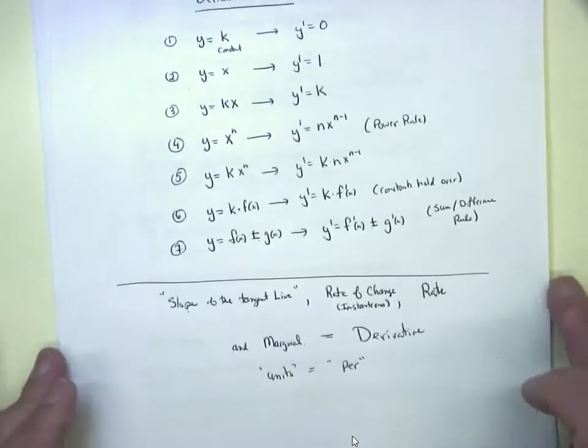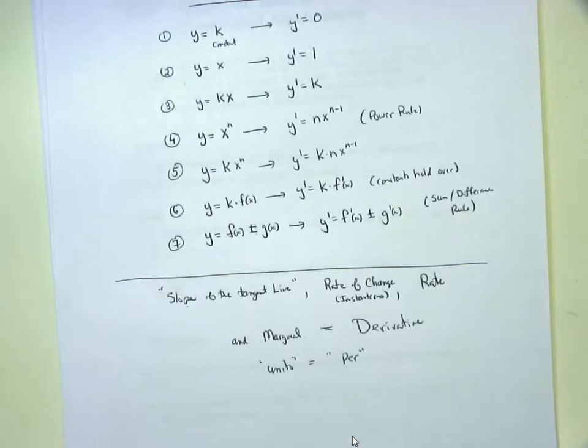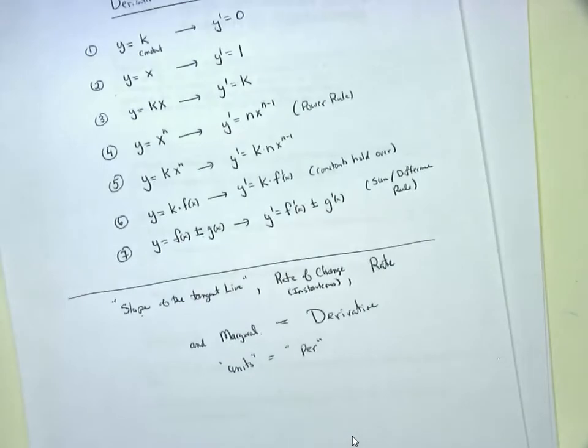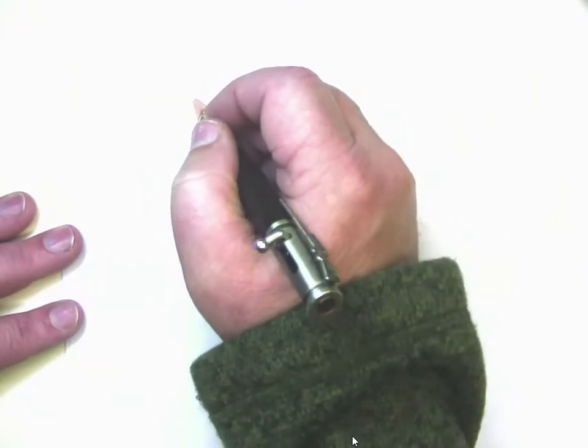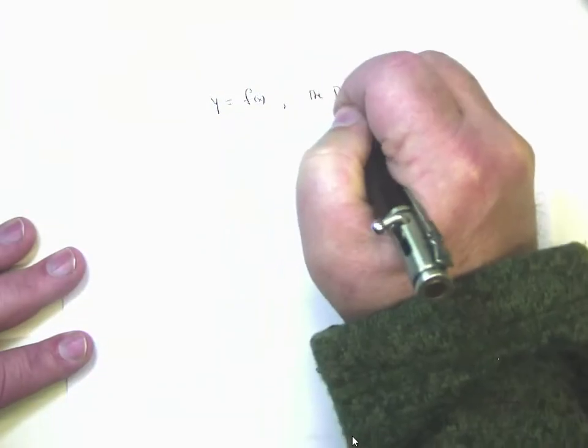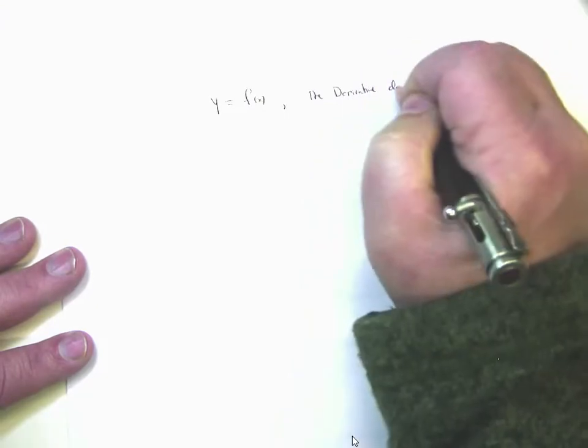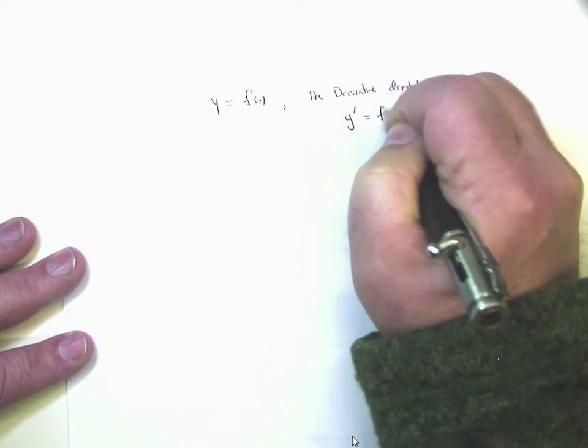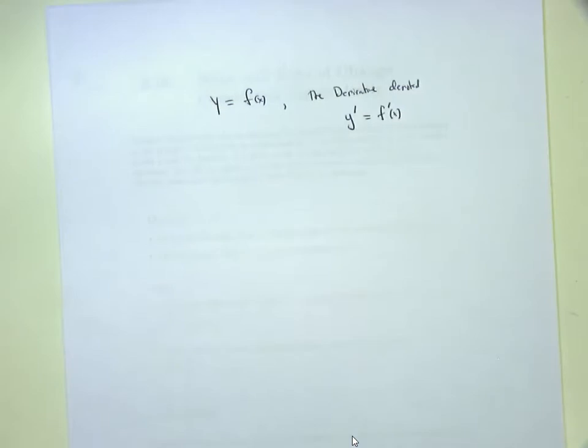Do you know who developed calculus? Sir Isaac Newton — who also developed Newton's second law (force = mass × acceleration). Newton developed calculus and the prime notation: if y = f(x), the derivative is denoted y′ or f′(x). This is called Newtonian notation. Newton was English, and around the same time a German mathematician named Leibniz also developed calculus independently.